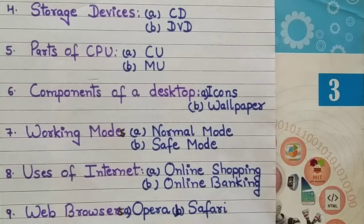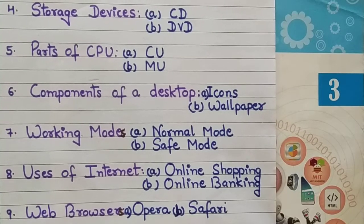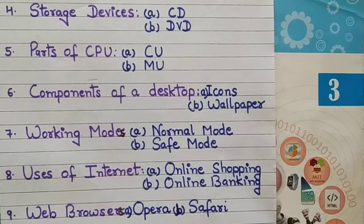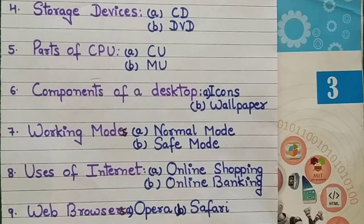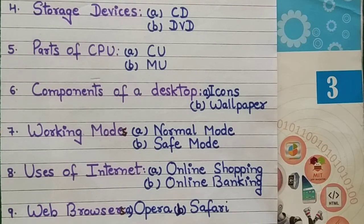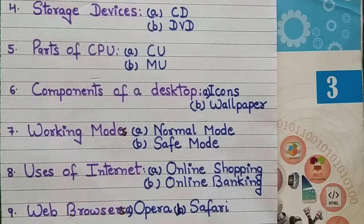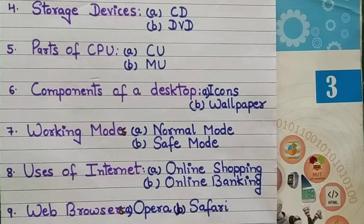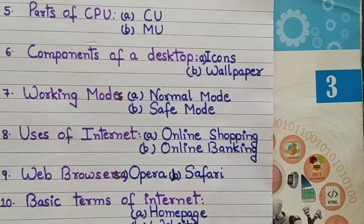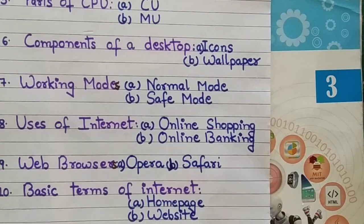Ninth, web browsers. To access anything on the internet, you need a web browser. Without it, you cannot search for any information on the internet. Examples include Opera, Google Chrome, Internet Explorer, Brave, and Safari.